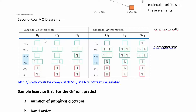Then you start filling in the electrons. B2 has six electrons total — each boron has three valence electrons. So you plug them in: two, four, then five and six, half-filling before pairing. For C2, which has eight total, you fill two, four, six, eight — again, half-fill before pairing.